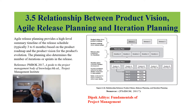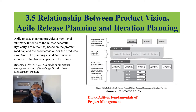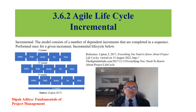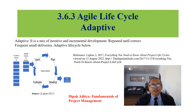Agile release planning provides a high-level summary timeline of the release schedule, and determines the number of iterations or streams in the release. In the iterative agile life cycle, deliveries happen at the end of each iteration, repeated until correct, with a single delivery. In the incremental life cycle, several dependent increments are completed in sequence. In the adaptive agile life cycle, a mix of iterative and incremental development is created with frequent small deliveries.